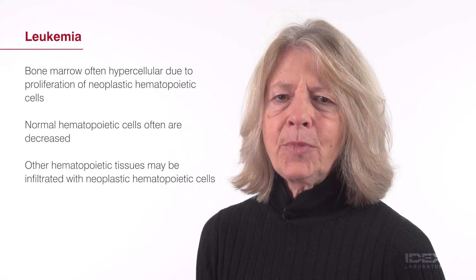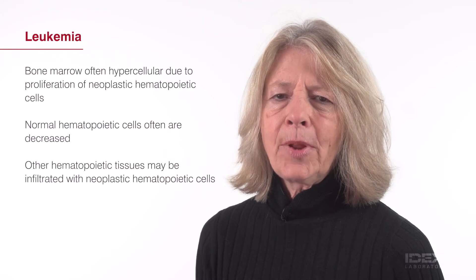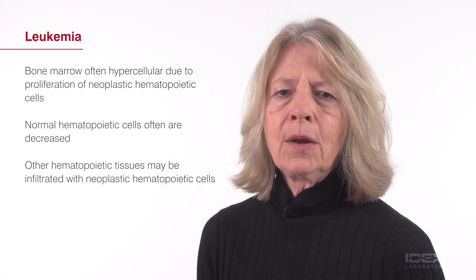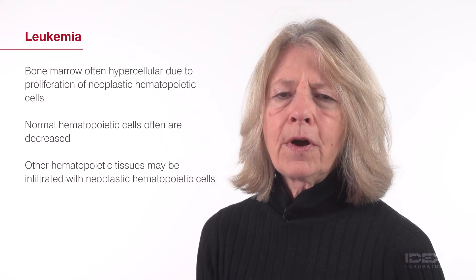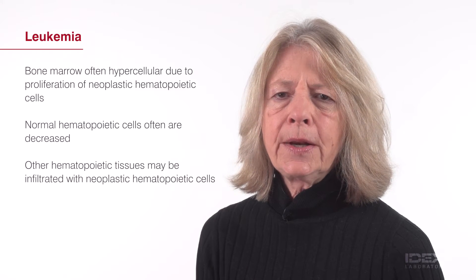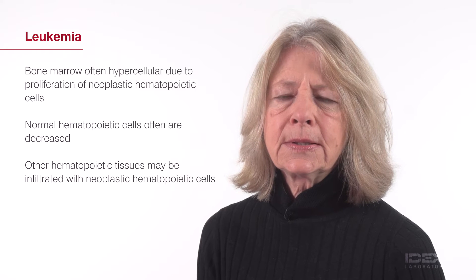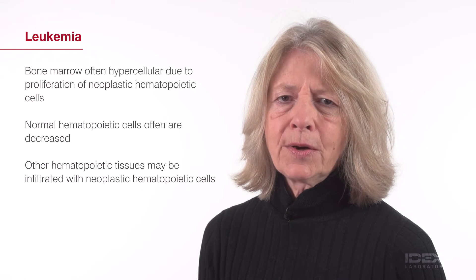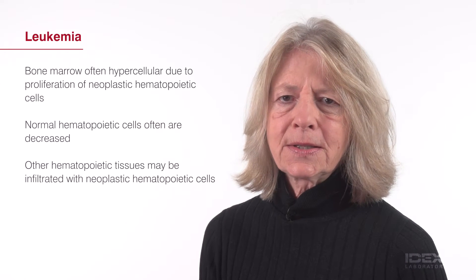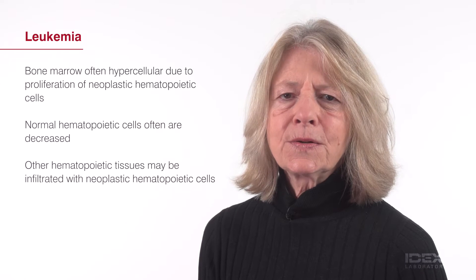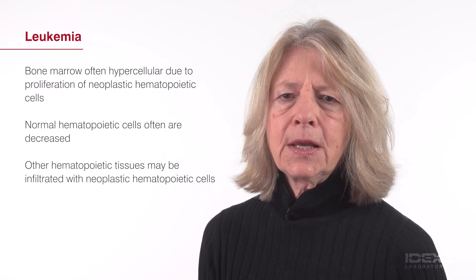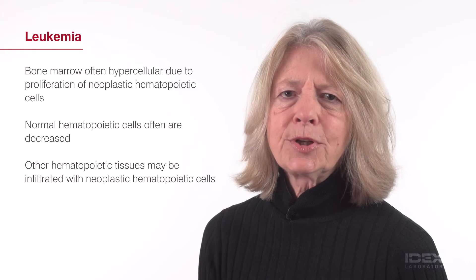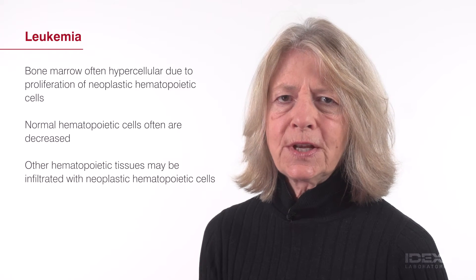In some cases, the neoplastic proliferation initially occurs in the spleen, with bone marrow involvement occurring later in the disease. Although leukemia is relatively rare in dogs and cats, the diagnosis and classification is important in establishing prognosis and treatment.